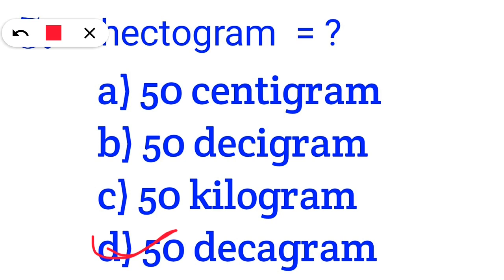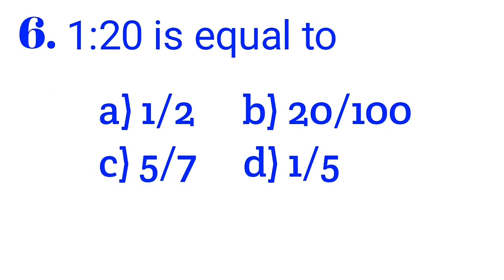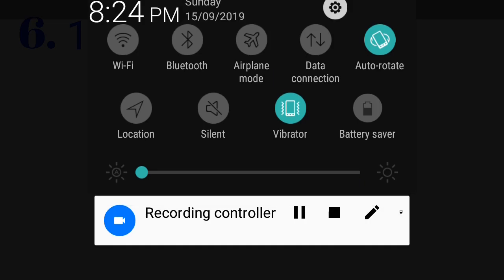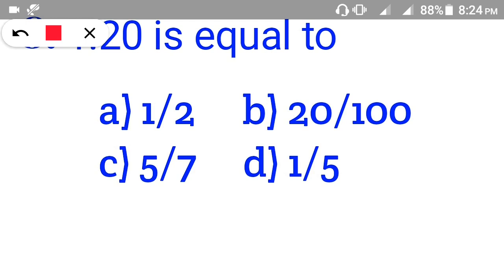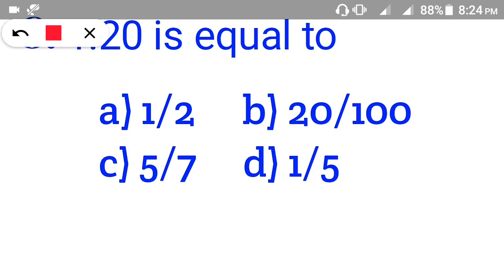Number 6: 1 to 20 is equal to 1. Number 7. We will write the correct answer. The ratio is 1 to 2.